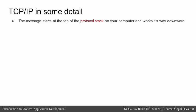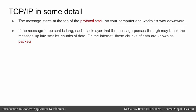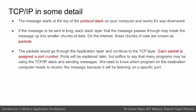Given the importance of TCP/IP, let's look at it in more detail. A message starts at the top of the protocol stack on your computer and works its way downward. If the message is long, each stack layer may break it into smaller chunks of data — on the internet these are known as packets. The packets go through the application layer and continue to the TCP layer, where each packet is assigned a port number. Many programs may be using the TCP/IP stack, so we need to know which program on the destination computer needs to receive the message, as it will be listening on a specific port.